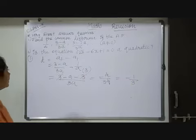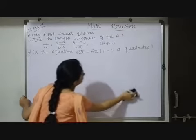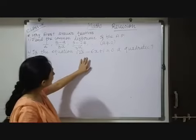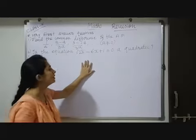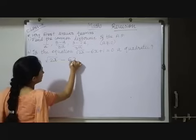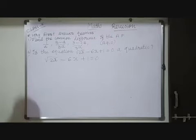Now here second question: Is the equation which is given quadratic or not, that we have to determine. Given equation is root 2X minus 6X plus 1 equals to 0. Now observe here X is also given in term of root.